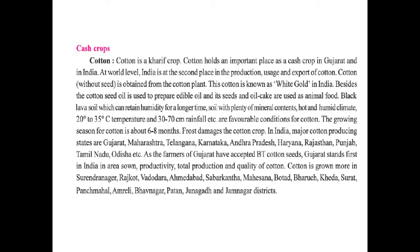Now let's come to cash crops, starting with cotton. Cotton is a kharif crop and holds an important place in cash crops in Gujarat and India. At world level, India is at the second place in production, usage, and export of cotton. Cotton without seeds is obtained from the cotton plant and is also known as white gold. Besides, oil from cotton seeds is used to prepare edible oil and oil cakes are used as animal food. Black lava soil which can retain humidity, temperature of 20 to 35 degree Celsius, and 30 to 70 cm of rainfall are favorable conditions. The growing season for cotton is about 6 to 8 months and frost damages the crop.